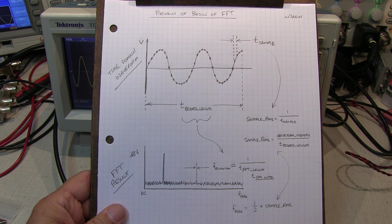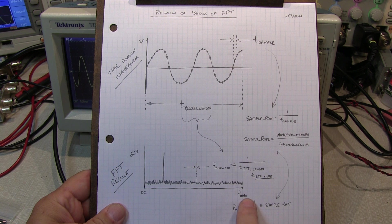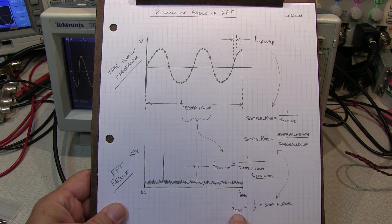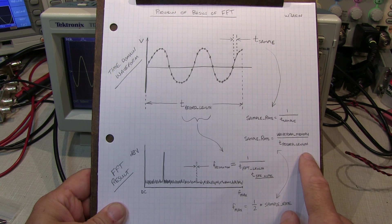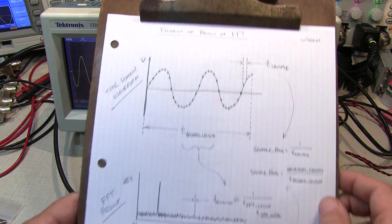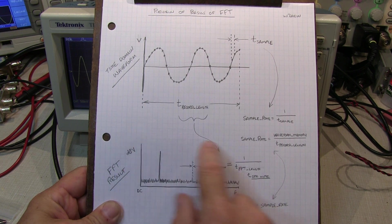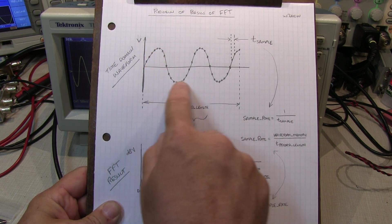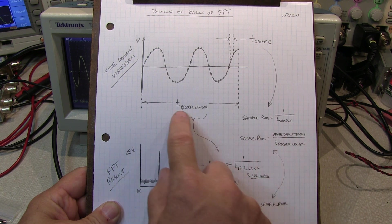The short story is that the sample rate determines what the maximum frequency coverage will be in the FFT result. The maximum frequency is simply equal to one-half of the sample rate. Just because your scope might say it does one gigasample per second doesn't mean that the waveform in memory is sampled at one gigasample per second. The sample rate of the captured waveform is equal to the waveform memory being used divided by the record length in time.